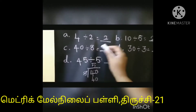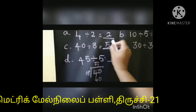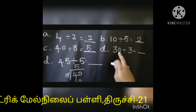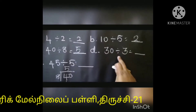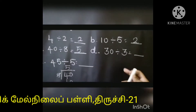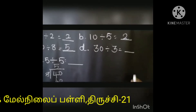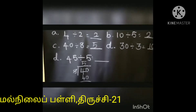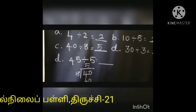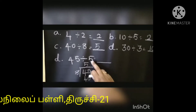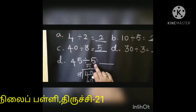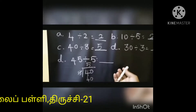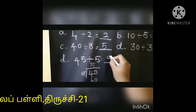8 5's are 40. 40 minus 40 is 0, so no remainder. The answer is 5. Next one: 30 divided by 3. It's very simple. 10 3's are 30. Next, the 5th one: 45 divided by 5. Here you are going to use the 5 table. You know 9 5's are 45. So the answer is 9.